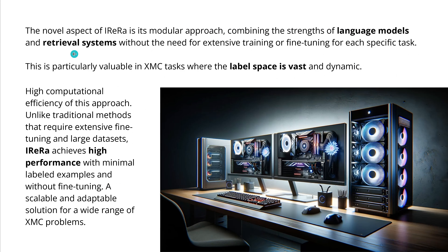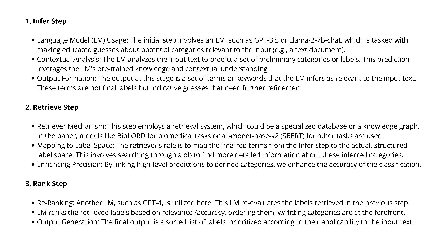We have language models, retrieval systems, and a huge dynamic label space requiring high performance. The authors found their methodology is really suited for this task. Looking at the three steps more precisely with scientific detail: first, a language model performs contextual analysis to produce output. Then, the retrieval mechanism maps to the label space with enhanced precision. Finally, a new language model re-ranks the retrieved labels based on accuracy and generates the final output.